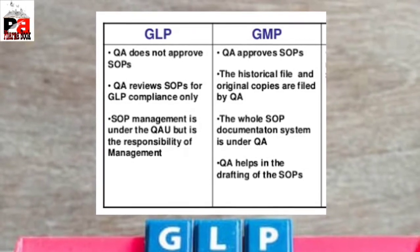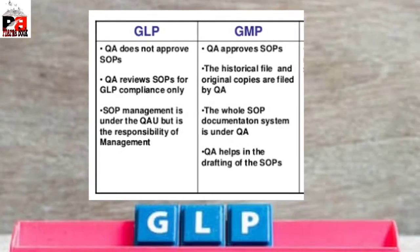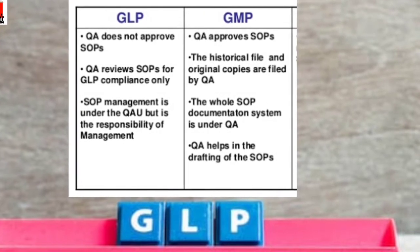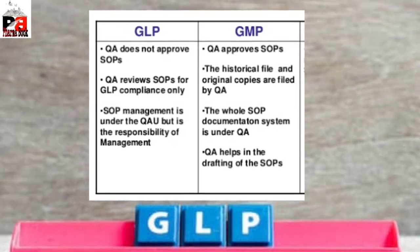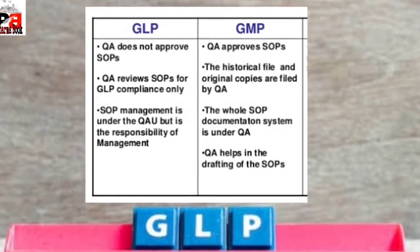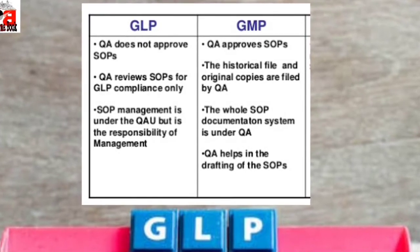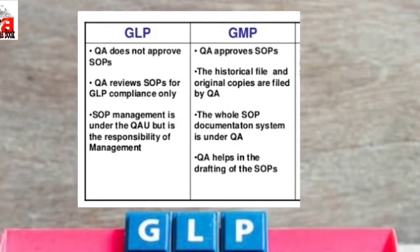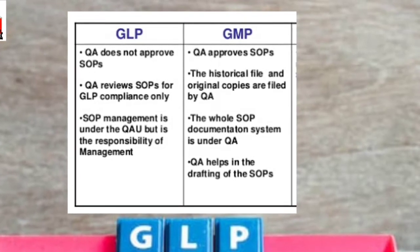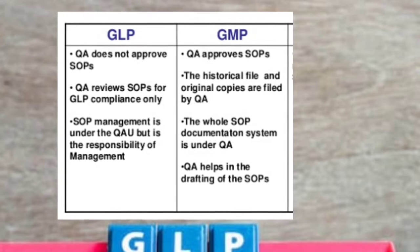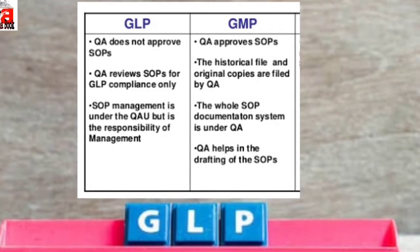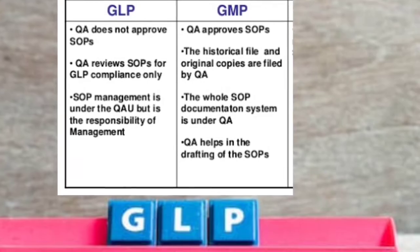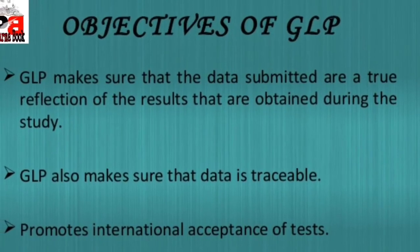In the case of GLP, the QA department is responsible for reviewing and approving SOPs, and ensuring GLP compliance. Historical data and original copies are filed by QA. Under GMP, quality control has broader responsibilities including entry into the plant and quality control department functions.